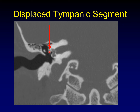Here's an example where the tympanic segment of the facial nerve on this coronal CT is overlying the oval window. You can imagine that if you wanted to approach this oval window surgically, the facial nerve would be in the way. Note that you can still see a bony covering over the facial nerve here — that canal is intact. This is not a dehiscent facial canal; this is just an inferiorly displaced tympanic segment within the normal bony fallopian canal. It still interferes surgically, but it's not dehiscent.